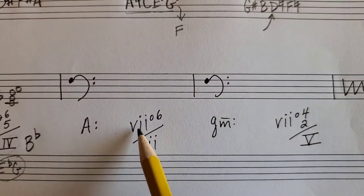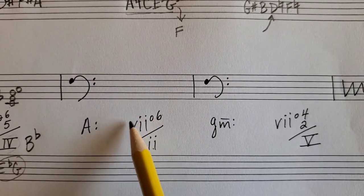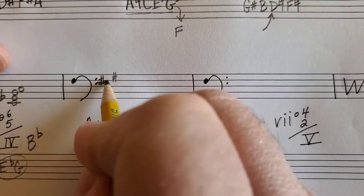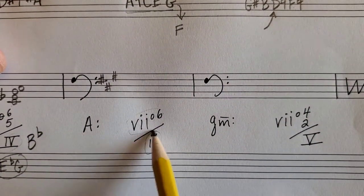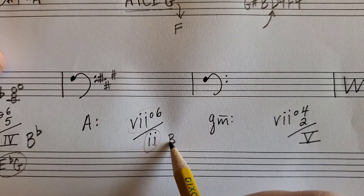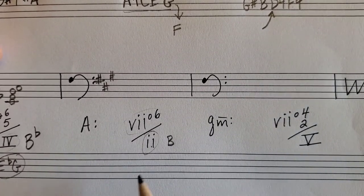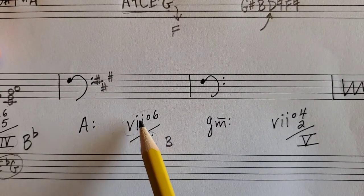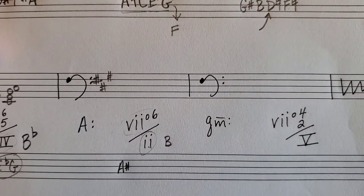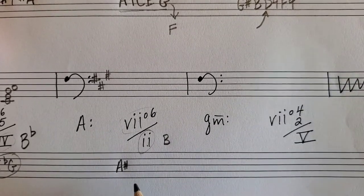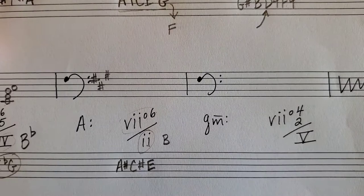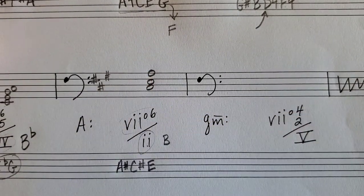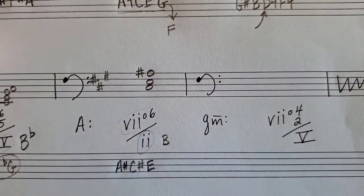A major, viio6/ii. We're writing a diminished triad. Key signature for A major. II in A major is B — it is actually B minor, but we don't need to know that to spell the chord correctly. The leading tone of B is A#. Spell the diminished triad on A#: A#, C#, E. Put C# in the bass for 6 position. On this one you only have to mark in the A#, because C# is already in the key signature.